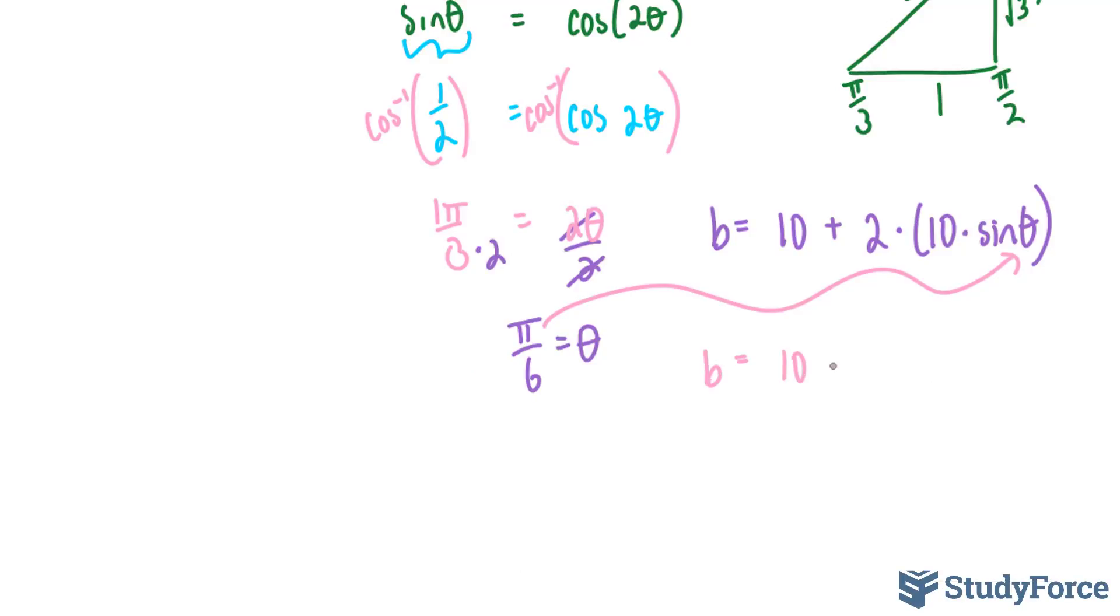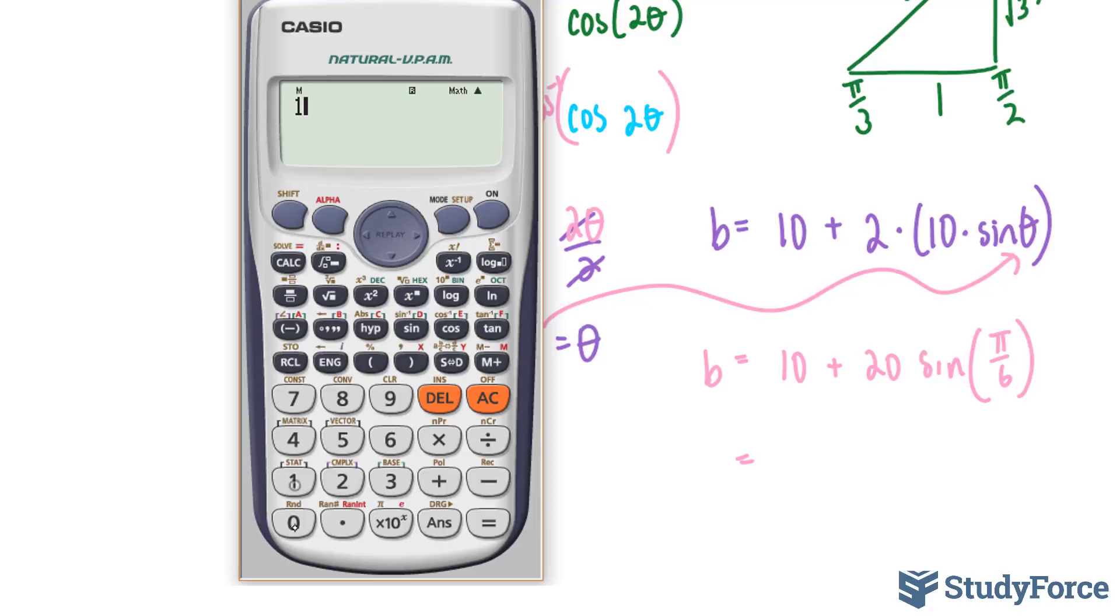We have 10 plus 20 sine of pi over 6. This 20 came from the fact that I multiplied the 2 and the 10 together. Using our calculator, 10 plus 20 sine of pi over 6 gives us 20.